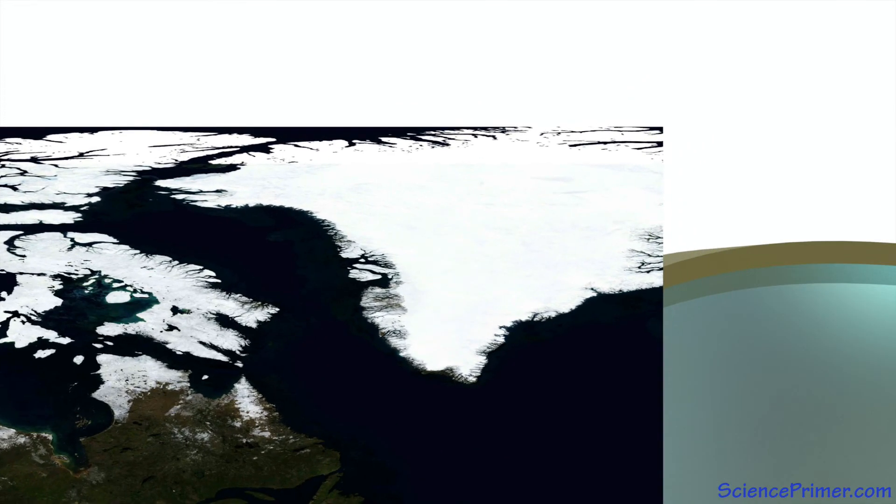A giant glacier sits on top of Greenland in the North Atlantic. The weight of over 2,000 meters of ice has pushed the crust low enough that the center of Greenland is below sea level. If all the ice were to disappear, seawater would rush in. The crust and mantle would rebound, but it would take thousands of years to reach isostatic equilibrium. During this time, the continent of Greenland would be underwater.